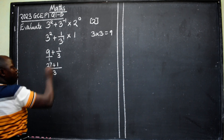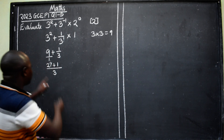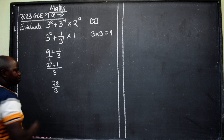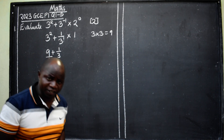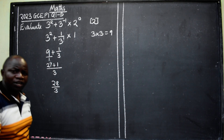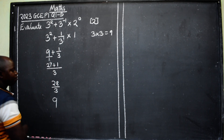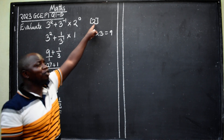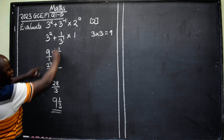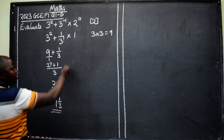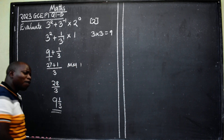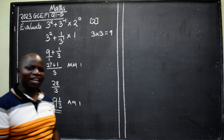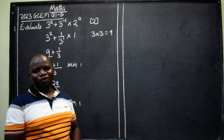27 plus 1 gives us 28 over 3. Converting to a mixed fraction: 3 goes into 28 nine times with remainder 1, so the answer is 9 and 1 over 3. We award the method mark at an intermediate stage and the answer mark for the correct final answer — giving the full two marks.